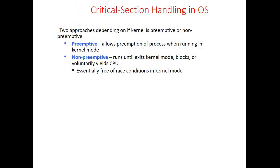Critical section solutions can be handled in two ways: preemptive and non-preemptive. Preemptive allows preemption of a process running in kernel mode — the process is forcibly terminated to release the CPU. Non-preemptive does not preempt processes; it allows the process to continue execution and waits until the process voluntarily releases the CPU or other resources.